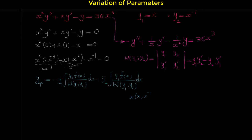The Wronskian of x and x to the negative one: place x and x to the negative one in the first row, then their derivatives — 1 and negative x to the negative 2 — in the second row. Computing the determinant: x times negative x to the negative 2 gives negative x to the negative 1. Minus x to the negative 1 times 1 gives minus x to the negative 1. So: negative x to the negative 1 minus x to the negative 1 equals negative 2x to the negative 1. This is the Wronskian.